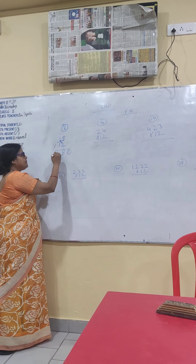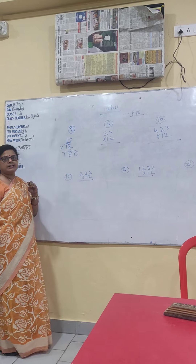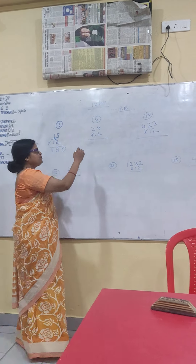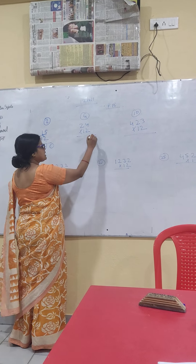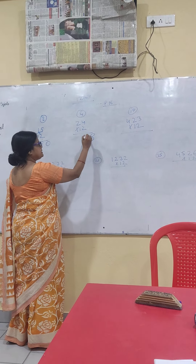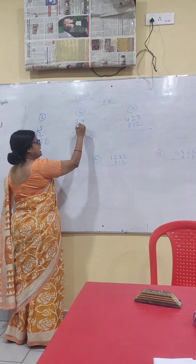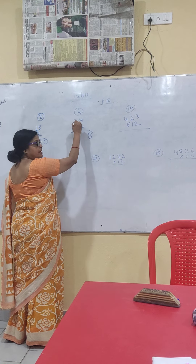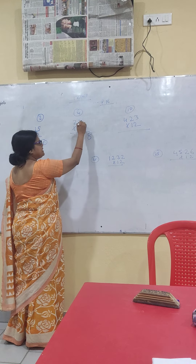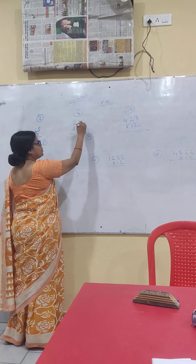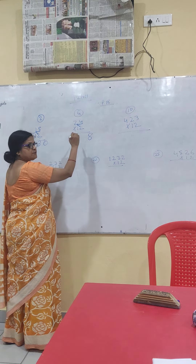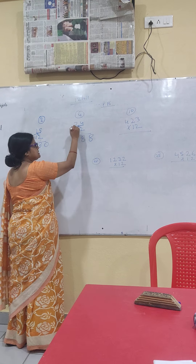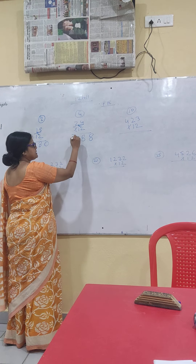Last digit to add 1. 2 fours are 8. Now the next step: 2 twos are 4, plus previous digit 4. 4 plus 4 is 8. Last digit: 8.